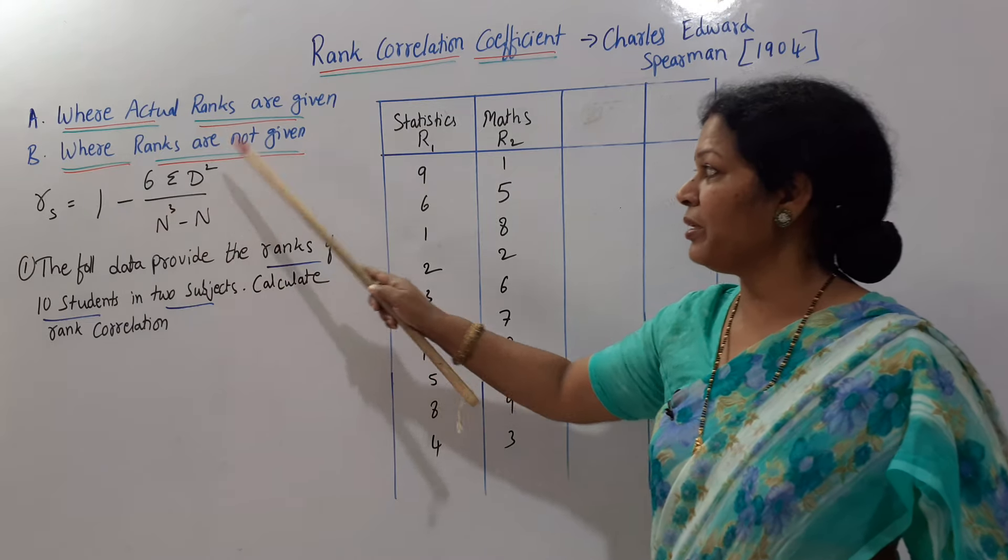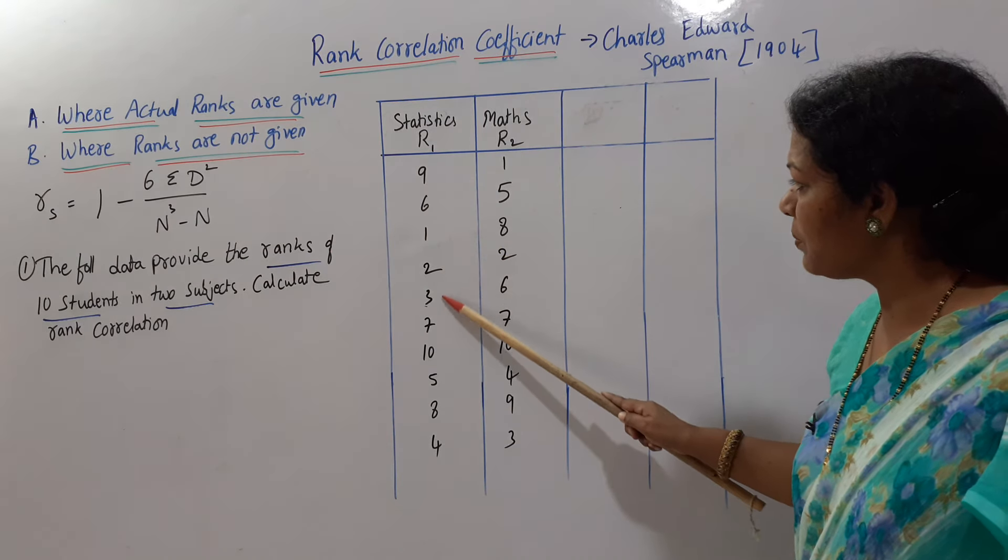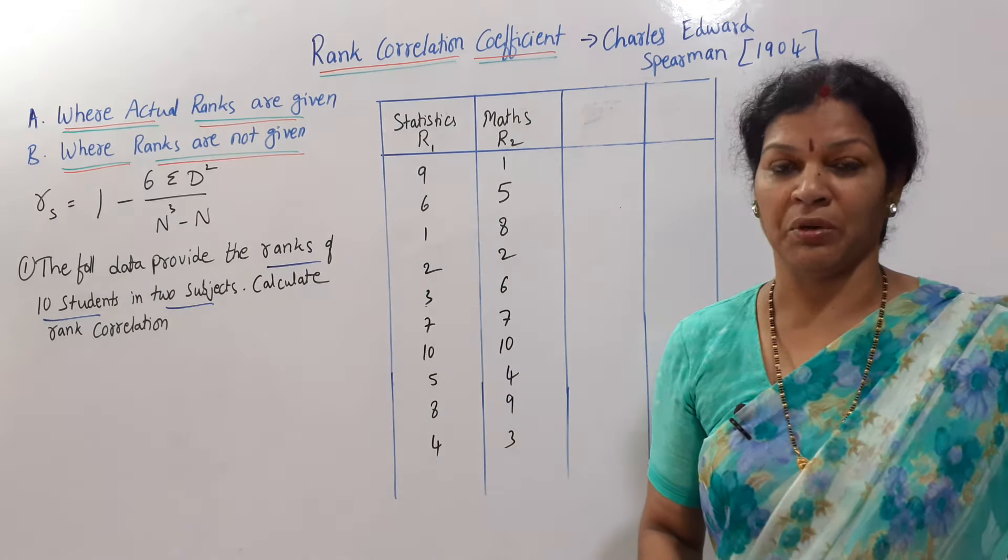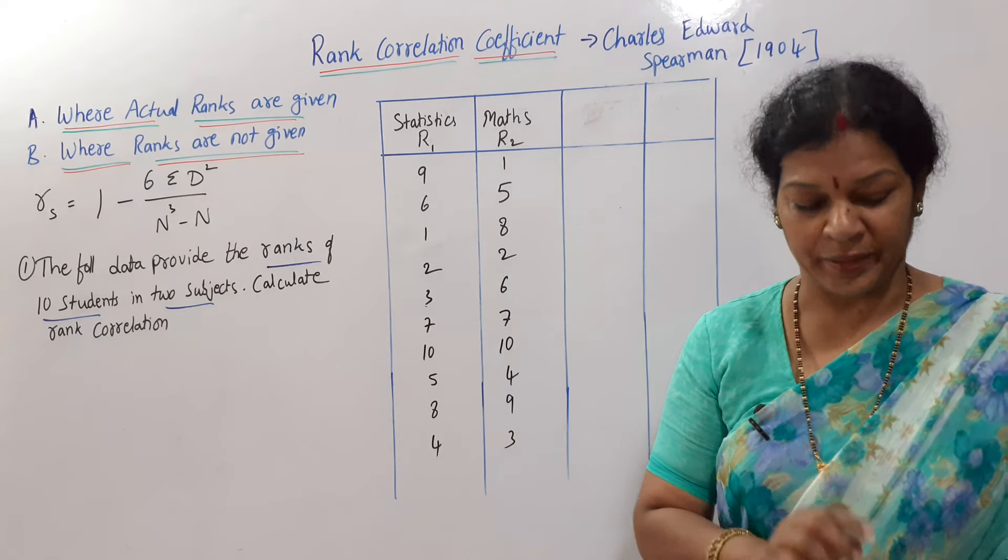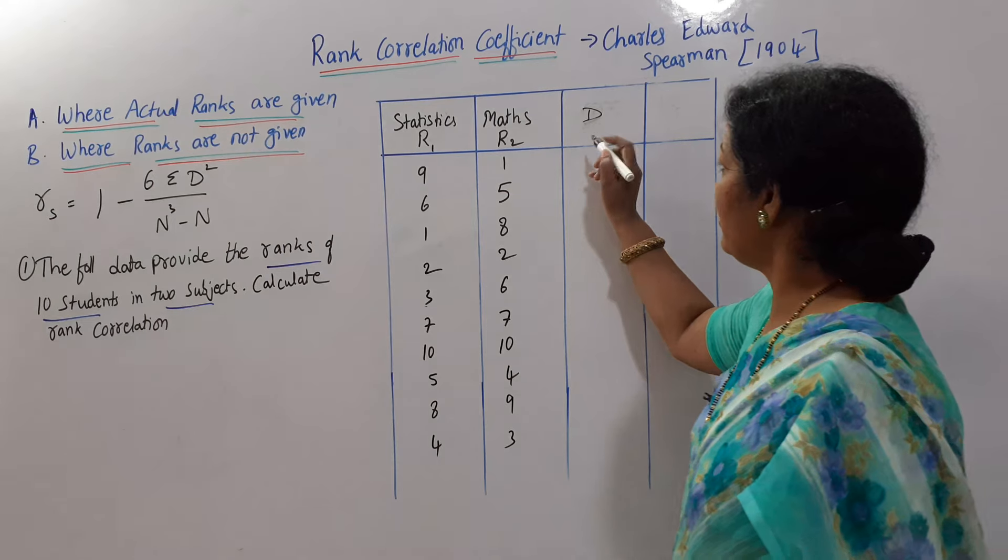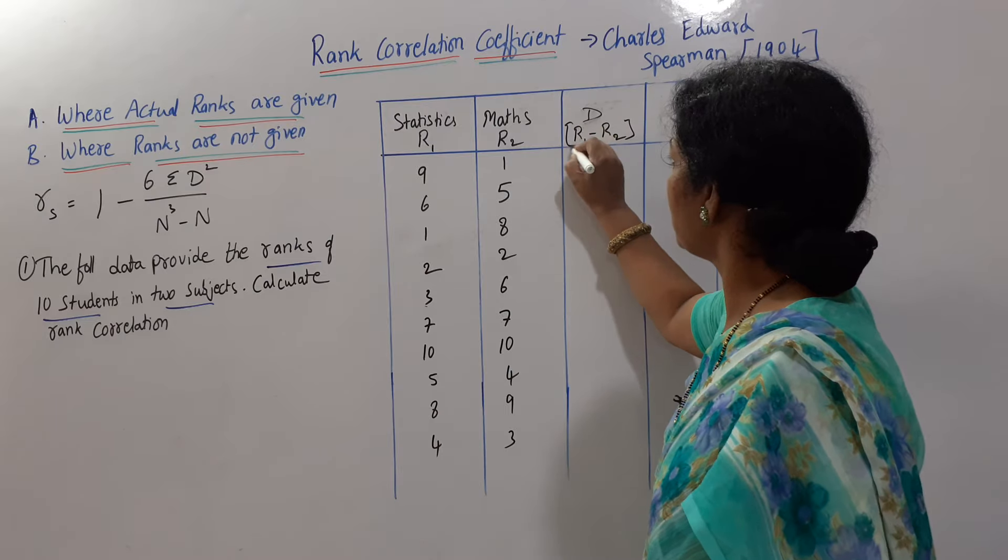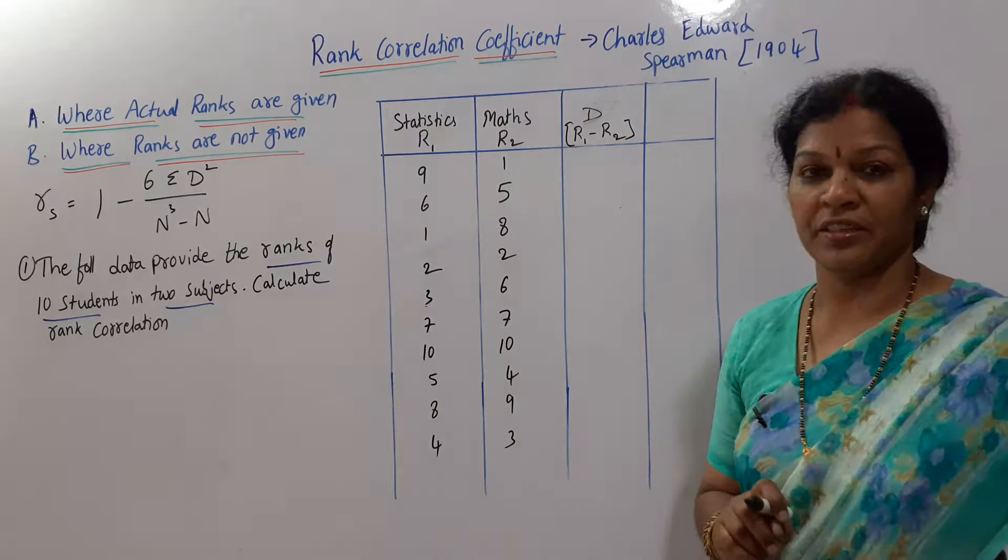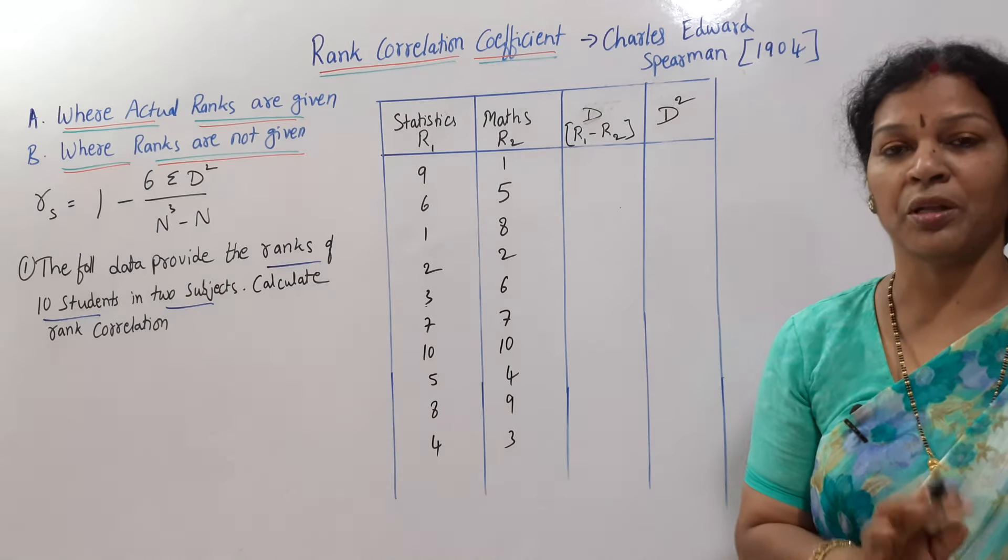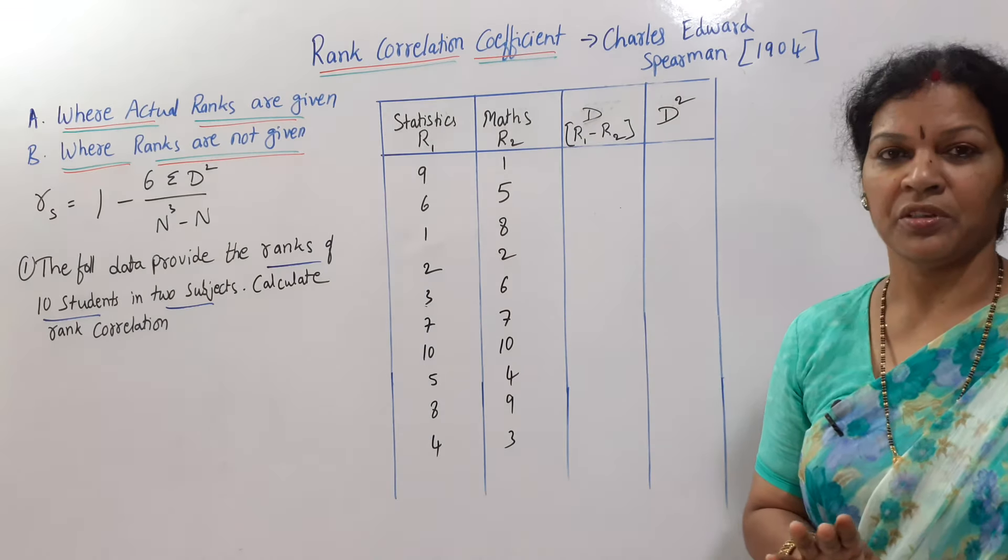As per the formula, 1 minus 6 sigma D square. Six is okay. Sigma D square we need. N means number of observations. How many are there? One, two, three, four, five, six, seven, eight, nine, ten. Ten. Anyway, ten students they already said. N is also we know. What do we need? D square we want. How do we calculate D square? First, we have to calculate D. So D we have to calculate. How do we get D? D is R1 minus R2. From R1 to R2, if we deduct it, we get D. And what do we need? D square we want. So another column D square. Only two columns we are preparing—one is D, another one is D square. D means R1 minus R2.